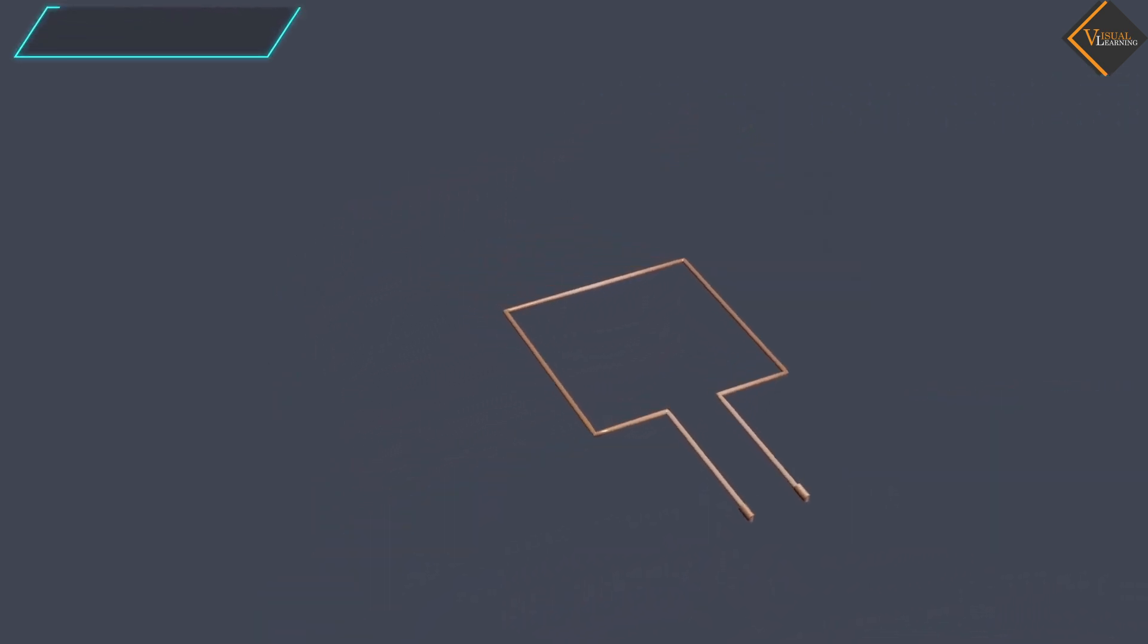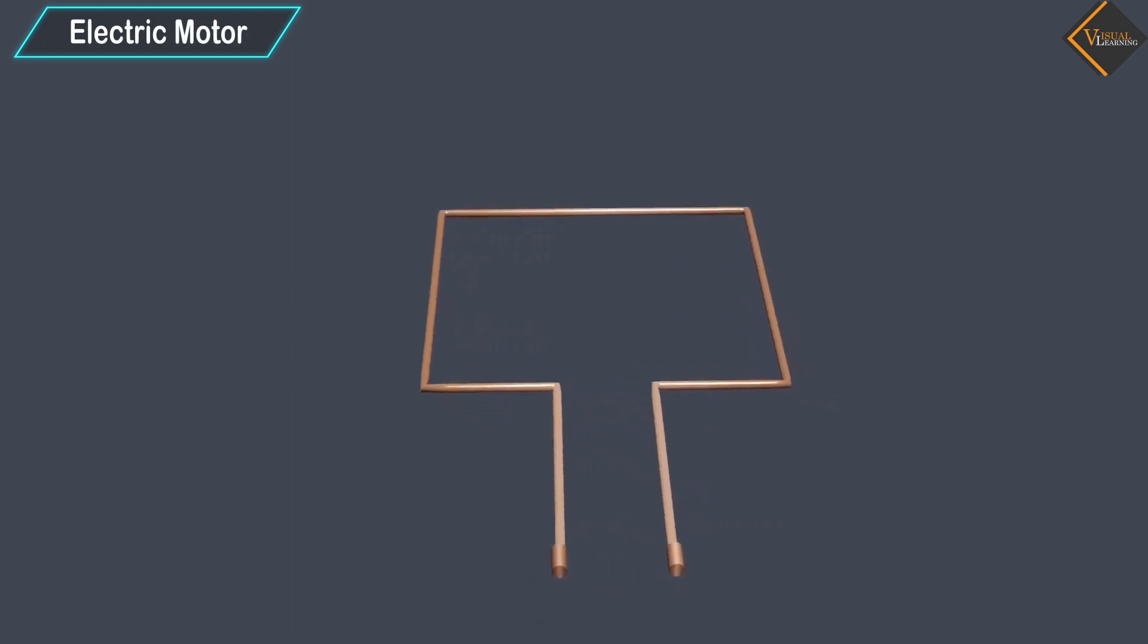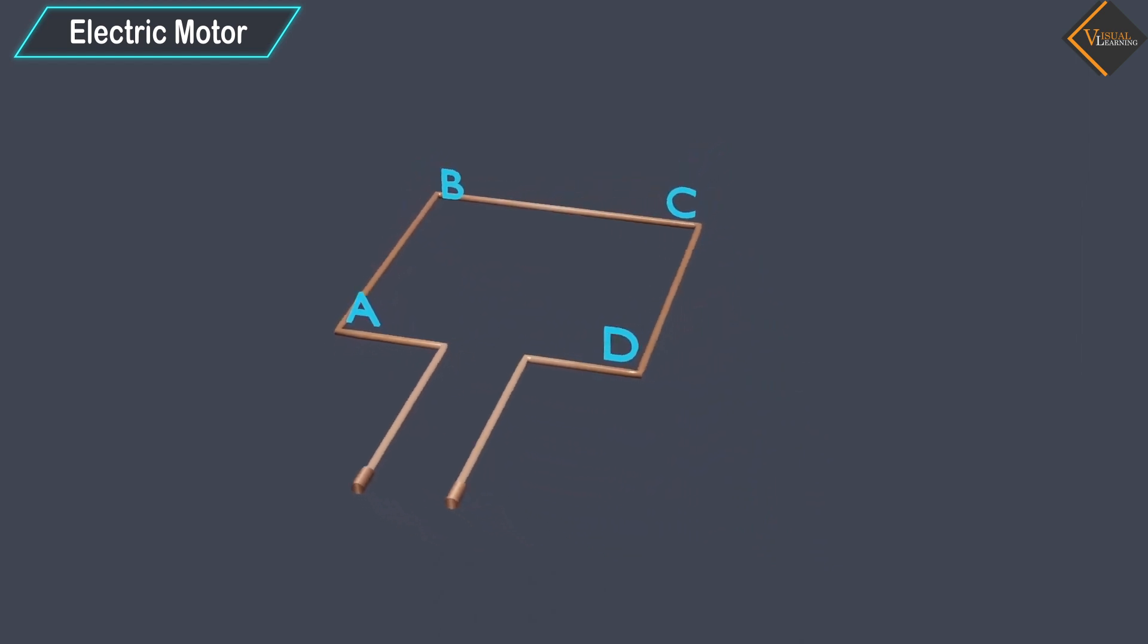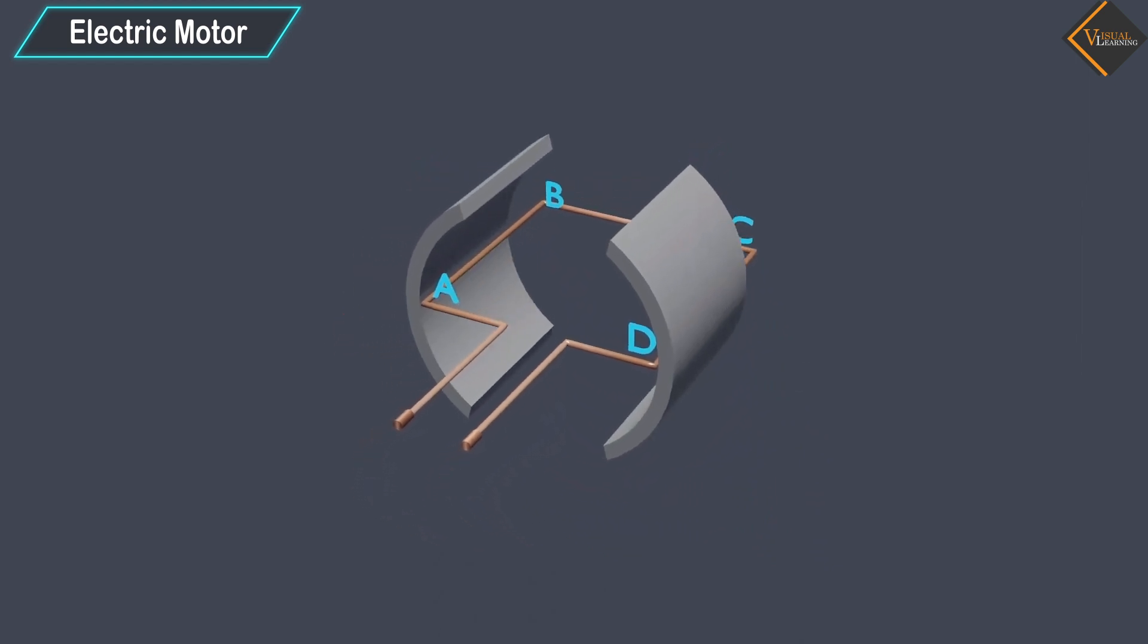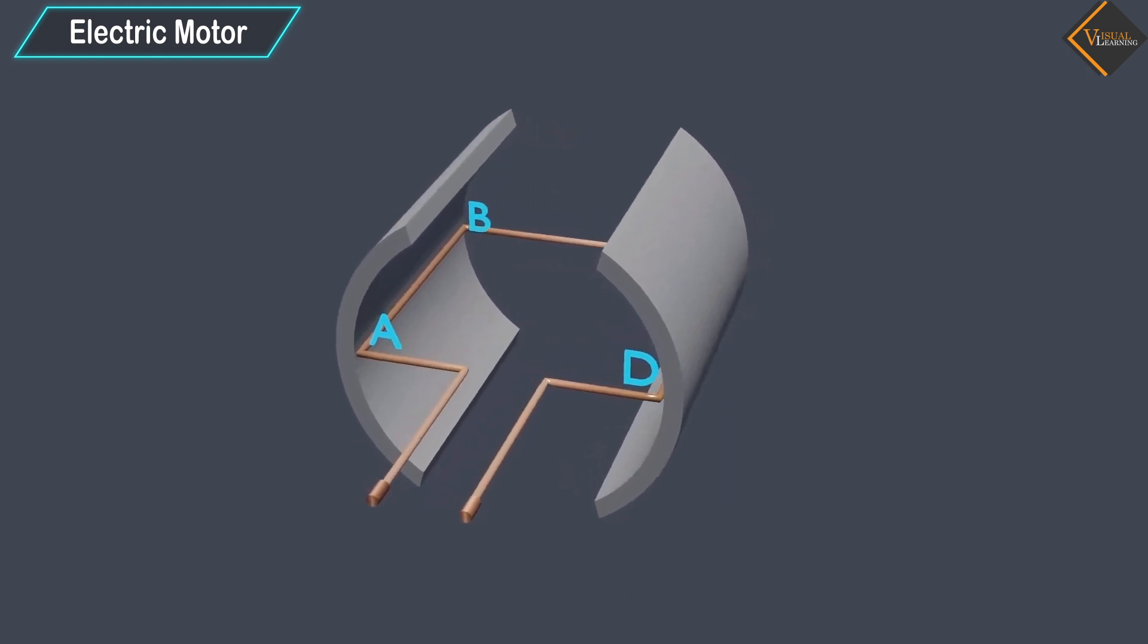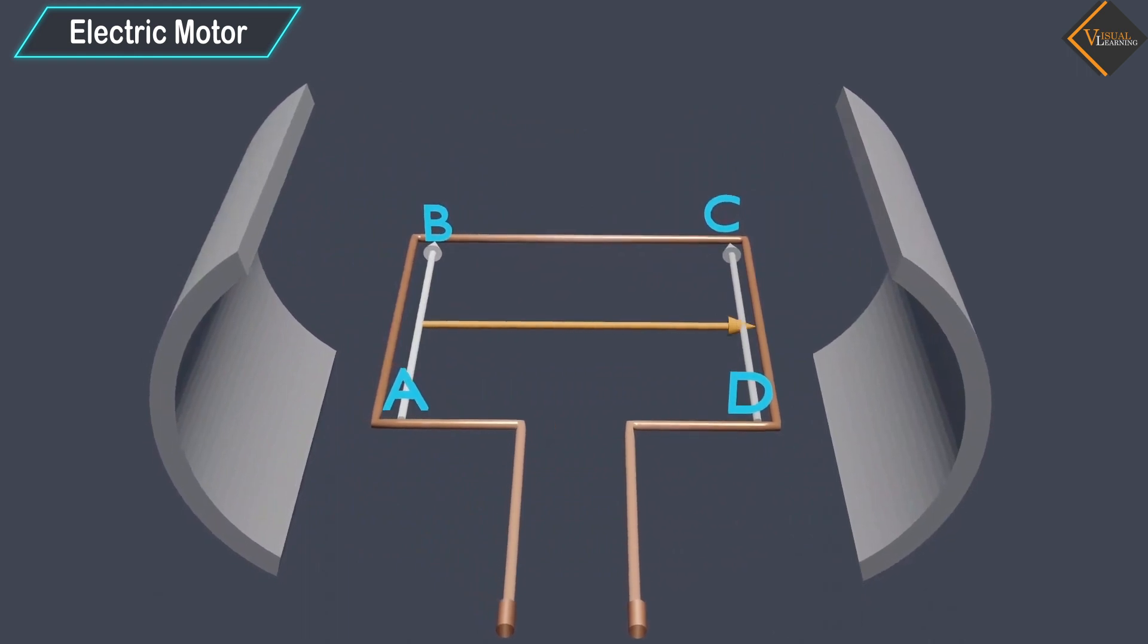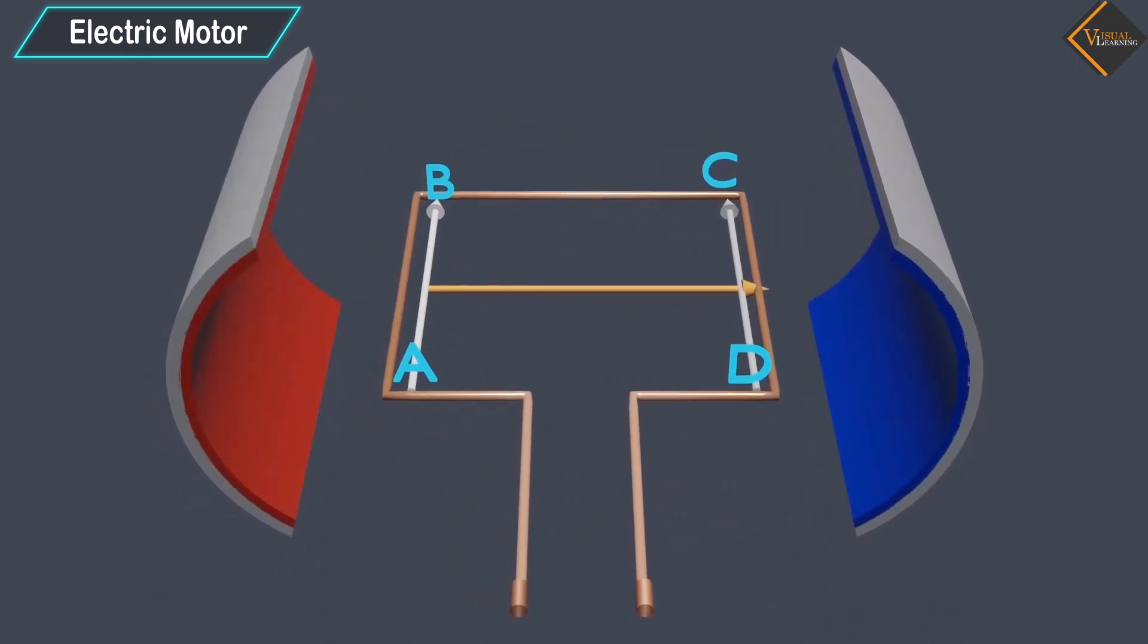An electric motor consists of a rectangular coil, ABCD, of insulated copper wire. The coil is placed between the two poles of a magnetic field such that the arms AB and CD are perpendicular to the direction of the magnetic field.